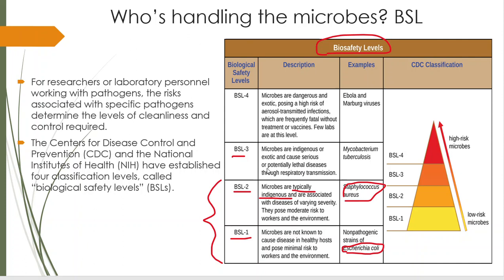BSL-3 — we're going up. These are organisms we don't normally deal with. They can be indigenous or exotic, meaning not normally found in this area — possibly from a different part of the world. Think about Ebola that was brought over here; we had to be very careful not to let it get established. These diseases are serious and possibly fatal, with respiratory transmission — the easiest way to spread disease. A good example is Mycobacterium tuberculosis, TB.